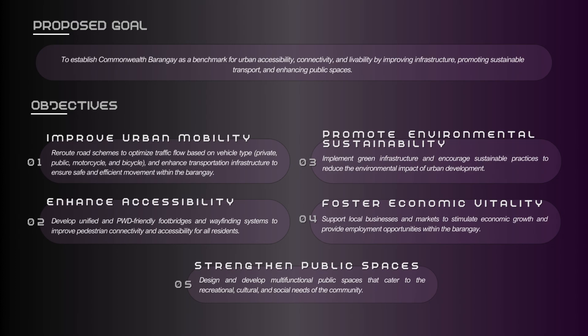Our objectives are: to improve urban mobility by rerouting road schemes to optimize traffic flow based on vehicle type — private, public, motorcycle, and bicycle — and to enhance transportation infrastructure for safe and efficient movement; to enhance accessibility through unified, PWD-friendly footbridges and wayfinding systems to improve pedestrian connectivity; to promote environmental sustainability by implementing green infrastructure and encouraging sustainable practices to reduce environmental impact; and to foster economic vitality by supporting local businesses and markets to stimulate economic growth and provide employment opportunities.